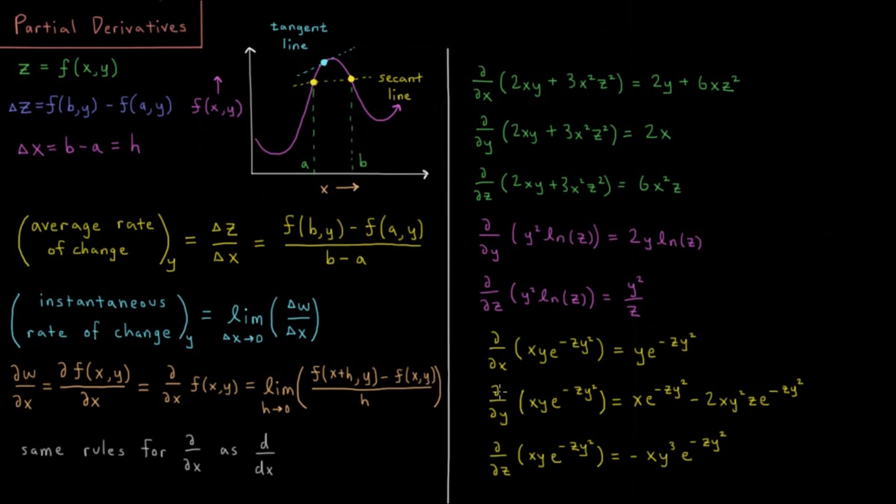For the derivative with respect to y, we have to use the product rule. We have xy—the derivative of that is x—times everything else, e to the minus zy squared.